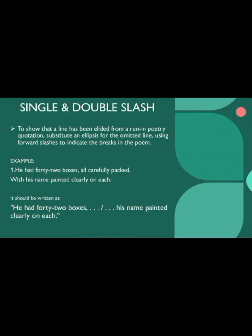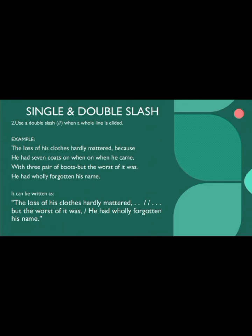There are places where single and double forward slashes should be used. Use a forward slash if any part of a particular line is omitted from the quotation. The example shows the appropriate use of ellipsis followed by a forward slash, which represents the line break. Use a double slash when a whole line is elided. From this example, we can infer that the second line is completely omitted, which is replaced by an ellipsis followed by a double slash.